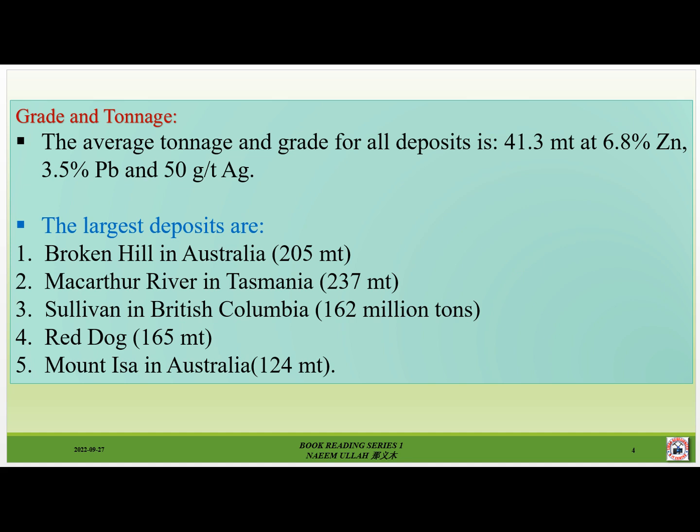The average silver grade is 50 grams per ton. The largest deposits are Broken Hill in Australia at 205 million tons, MacArthur River in Tasmania at 237 million tons, Sullivan in British Columbia at 162 million tons, Red Dog at 165 million tons, and Mount Isa in Australia at 124 million tons.